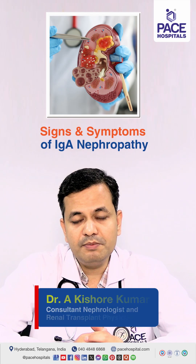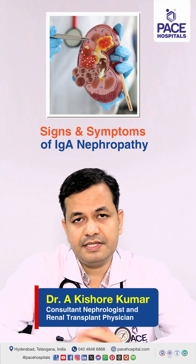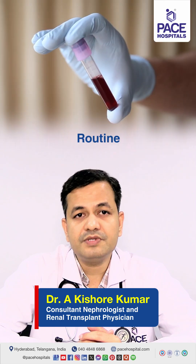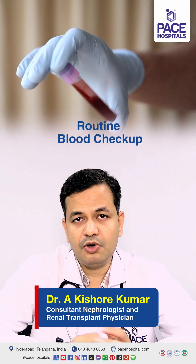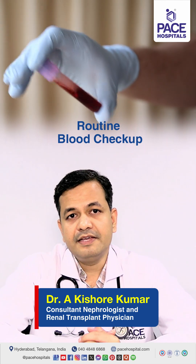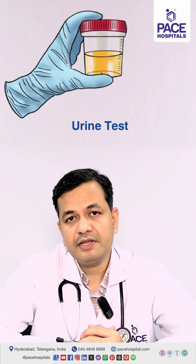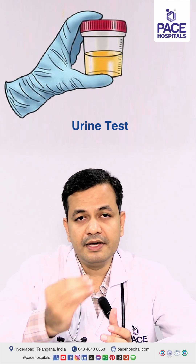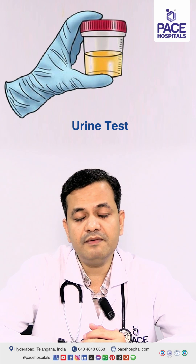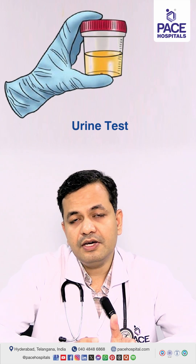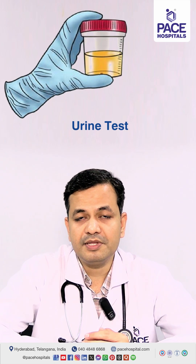IgA nephropathy is one such kidney problem where there are no symptoms and signs in the initial stages. Majority of the patients are diagnosed when their routine blood checkup is done for health-related or job-related or any other routine testing, where they find that their urine test is showing protein in the urine, or if there is blood in the urine showing red blood cells. Along with that, some patients may have increase in the creatinine. These are the usual abnormalities found in patients with IgA nephropathy lab-wise.